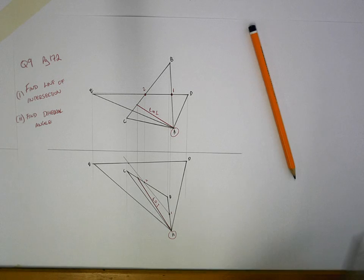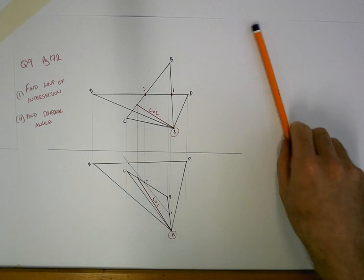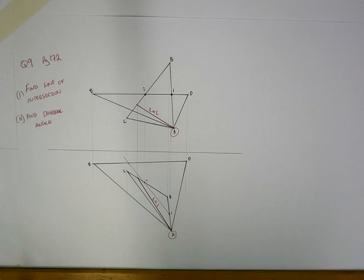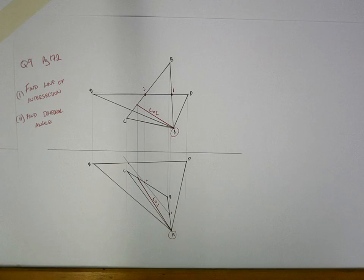The steps that I'm going to do here are the ones that you always follow to find the dihedral angle. The first thing you do is you take your line of intersection in plan view and you look perpendicular to it. The reason you look perpendicular to it is because you want to get a true length of it.